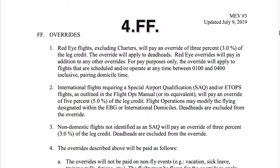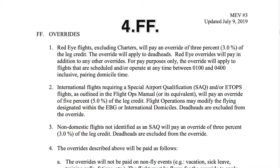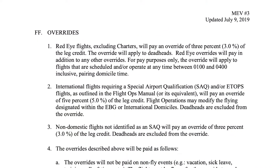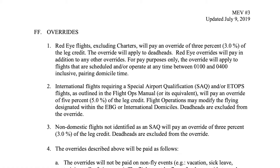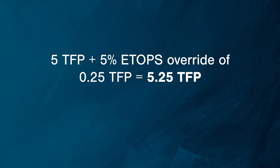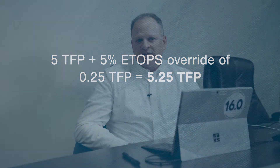Section 4FF lists the override percentages and how they apply. As an example using these contractual rules, if you were to fly an ETOPS leg with a straight pay value of 5 TFP, the 5% override of 0.25 TFP will result in the flight paying a total of 5.25 TFP.